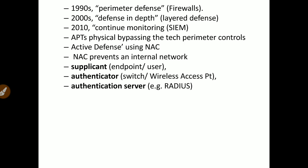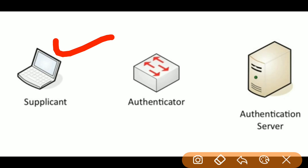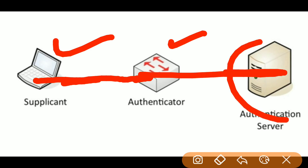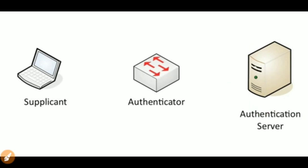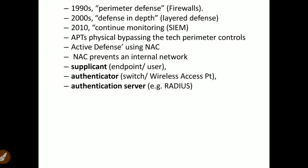The supplicant is basically the endpoint for a user. The authenticator is a switch or wireless access point, and the authentication server is any server such as Remote Authentication Dial-In User Service, or RADIUS. Before granting access, the authenticator gets the supplicant verified by the authentication server. Once verified, the supplicant or endpoint is granted access to the internal network.